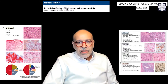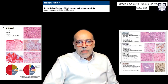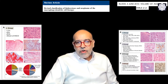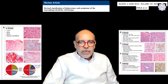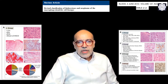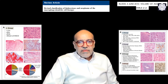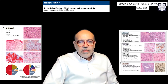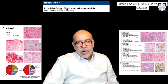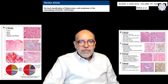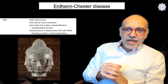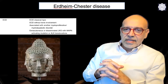Group C has to do with acute cutaneous histiocytosis — an example is juvenile xanthogranuloma. Then Group R, or Rosai-Dorfman disease, which is very important for neurologists because it can be located in the brain or in the orbit. Then you have Group M, or malignant histiocytosis.